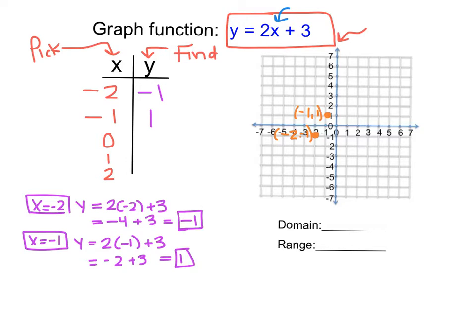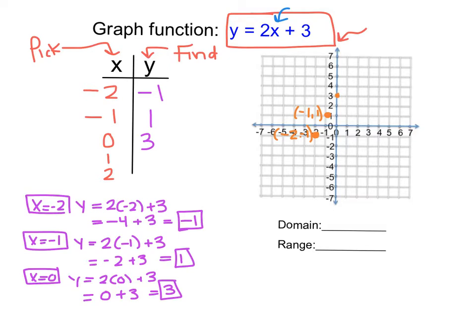Then we look at the next point: x is equal to 0. So y equals 2 times 0 plus 3, which gives us 0 plus 3, equal to 3. So when x is 0, y is 3. Again I go through and plot that — x is 0, y is 3.